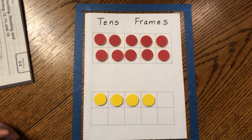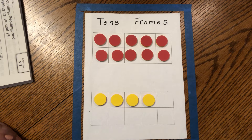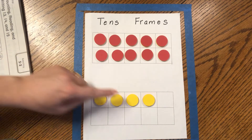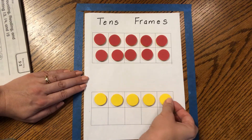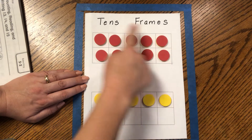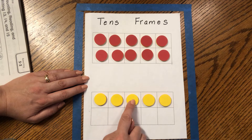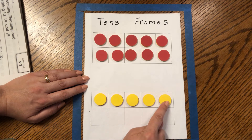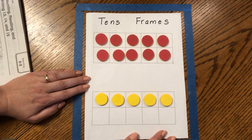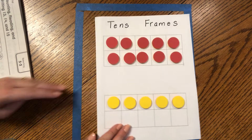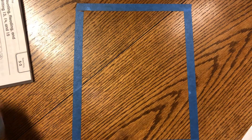How about if I wanted to show the number 15 on a 10 frame with two 10 frames? Did you say a 10 and five 1s? You are right: 10, 11, 12, 13, 14, 15. Great job counting on. So now that we've practiced with 10 frames and our counting dots, let's go ahead and look inside of our math workbook at 5-2.